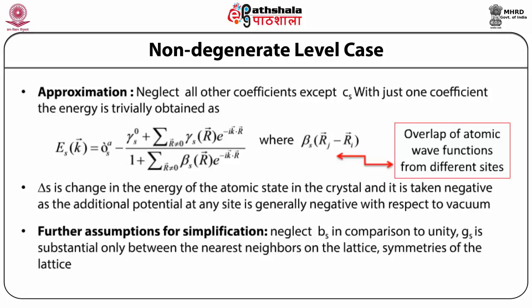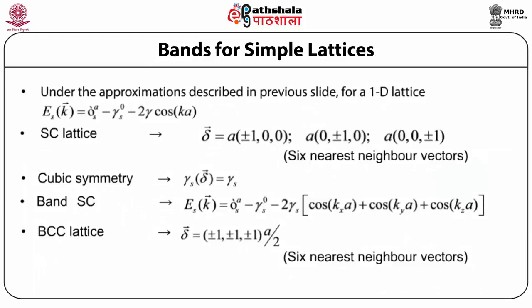We neglect β_s in comparison to unity and assume that γ_s is substantial only between nearest neighbors. The inversion symmetry imposes δV(−R) = δV(+R), and for s-like atomic states which are spherically symmetric, γ_s(−R) = γ_s(R). For a one-dimensional lattice, E_s = ε_s − Δ_s − 2γ cos(ka), where ε_s is essentially the kinetic energy contribution.